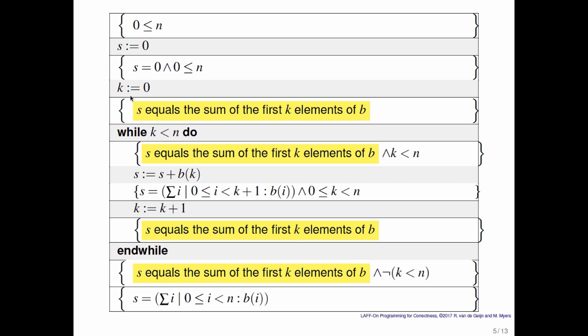Now why is that true? That's true because s is set to zero, k is equal to zero, and if you sum over the empty range then indeed you get zero. So that's like the base case for mathematical induction for the case where k is equal to zero.